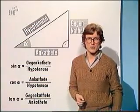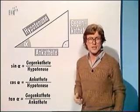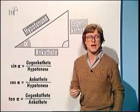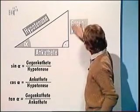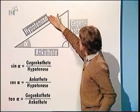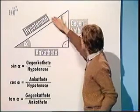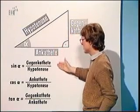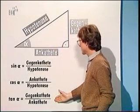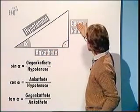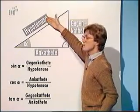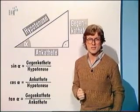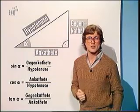Wir haben nun alle drei bekannten Winkelfunktionen auf das rechtwinklige Dreieck übertragen. Immer dann, wenn zusätzlich zu dem rechten Winkel noch ein anderer Winkel und eine Seite vorgegeben sind, lassen sich mithilfe der Winkelfunktionen die anderen beiden Seiten berechnen. So lässt sich etwa eine Seite mit dem Sinus berechnen und eine weitere Seite mithilfe des Tangens. Bei praktischen Anwendungen dieser Verhältnisse spielt der Tangens eine große Rolle, und wir wollen uns das einmal an einem Beispiel aus dem Vermessungswesen verdeutlichen.